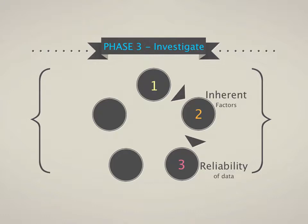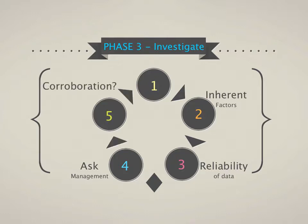Consider the reliability of the data — are budgets reliable, are they following the same accounting policies as the previous year, or do accounting adjustments still need to be made? Talk to management to find out if they have any ideas why the numbers differ so much. Then, once you have all this information, consider other evidence you have and whether it all fits together and corroborates — that's how you investigate the variances.